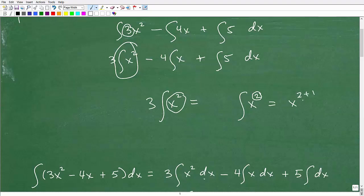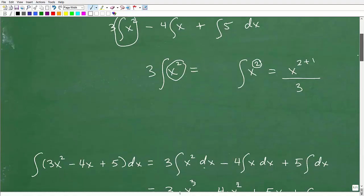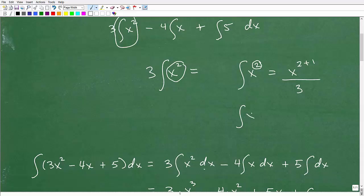And then we're going to go ahead and divide this term by this sum, 2 plus 1, which of course is 3. So the integral, go ahead and write this down here. Integral of x² is equal to x³ over 3.